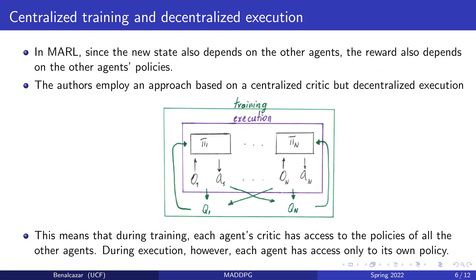The central idea of MADDPG is that since the new state also depends on other agents, the reward also depends on other agents' policies. To deal with this, the authors employ an approach based on centralized training with decentralized execution. In this figure, the Q function of every agent has access to the policies of all agents during training, but during execution each agent's policy is executed independently by itself.